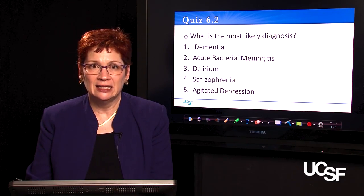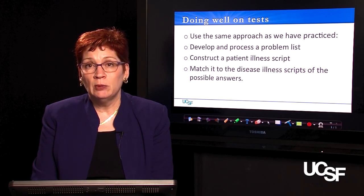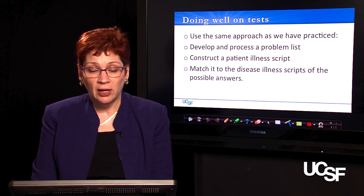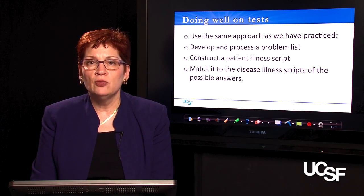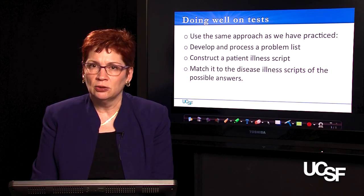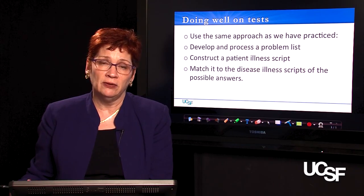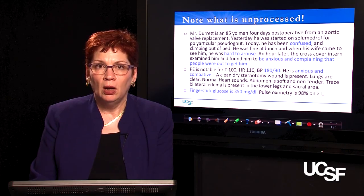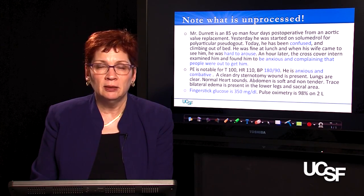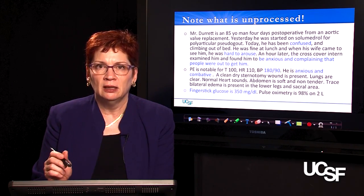Okay, let's analyze this question. Doing well on tests uses the same approach as we have practiced. You develop and process a problem list for this patient, you construct a patient illness script, and then you match it to the disease illness scripts of the possible answers — or the disease illness scripts linked to the possible answers if the answers are given in terms of treatment. Note in this history what elements are unprocessed, because sometimes questions deliberately don't process the key elements of the case.